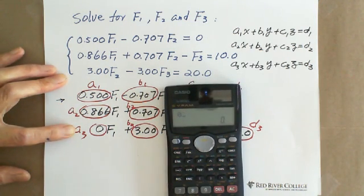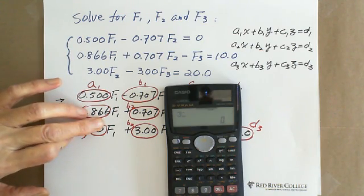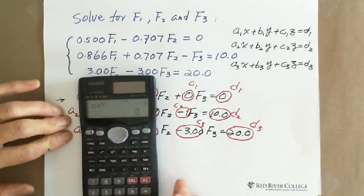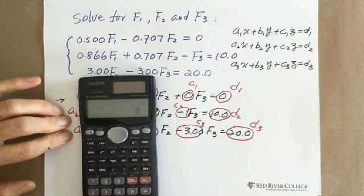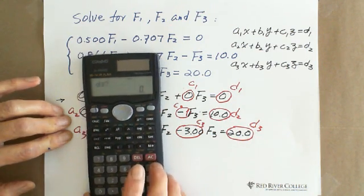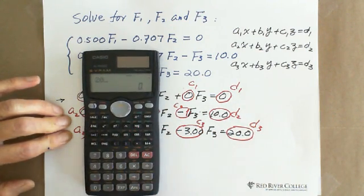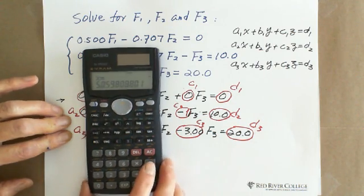A3 equals 0. B3 equals 3. C3 equals negative 3. And D3 equals 20. They give you an answer.